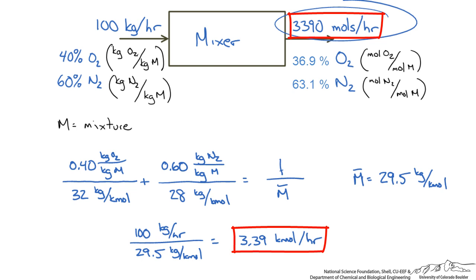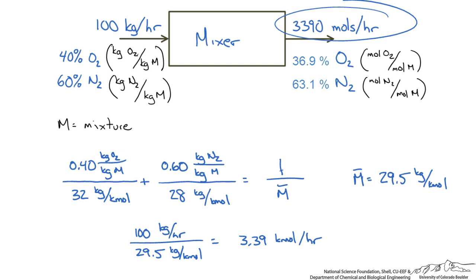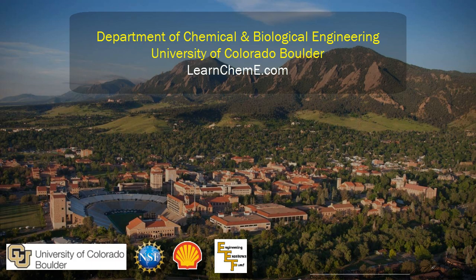So when doing this for two components you can see the work is not that much quicker. But if you had a stream with 7 or 8 components, like a distillation column, calculating an average molecular weight could save you a lot of time. Hopefully this gives you an idea of how to calculate the average molecular weight based on both mass and mole fractions.